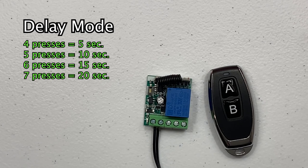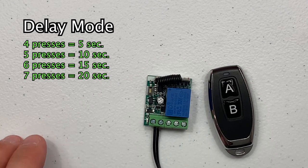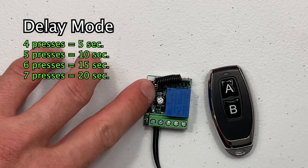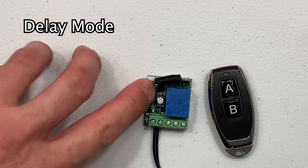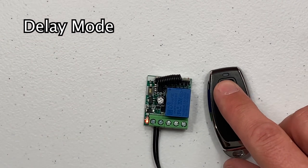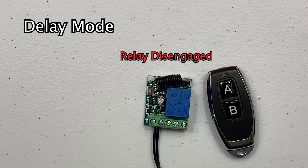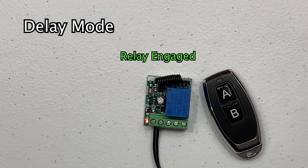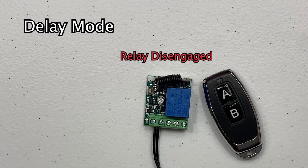In delay mode, subsequent presses of the button will reset the timer countdown but will not accumulate any more time beyond what was set by the button presses. Pressing the button will engage the relay for five seconds and then disengage.